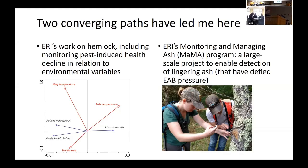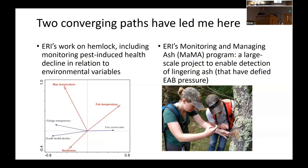Their hemlock work includes monitoring pest-induced health decline in relation to environmental variables — relating many variables to show different rates of tree decline when incorporating environmental variables, spatial variables, and history of HWA and EHS attack. They also have their monitoring and managing ash program, called MAMA — a large-scale project to enable detection of lingering ash that have defied EAB pressure.